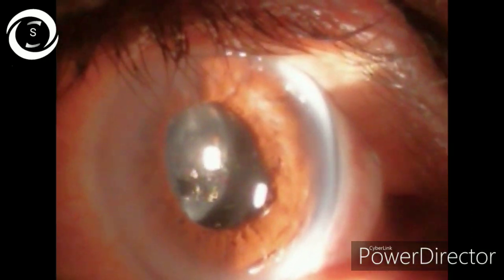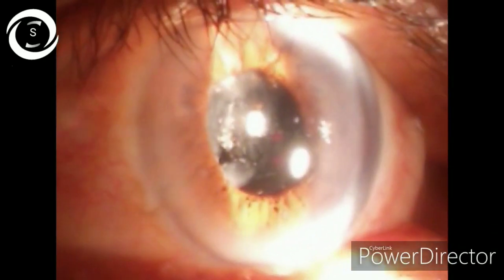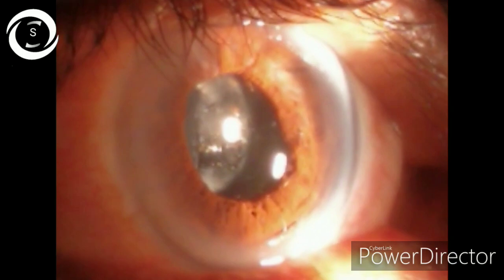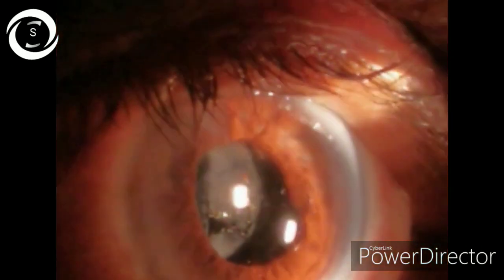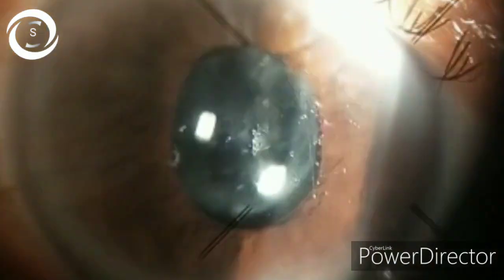On slit lamp, see Elschnig pearls. What are the Elschnig pearls? They are round and clear pearl-like opacities that shine on retro-illumination and Soemmering's rings - these are rings of epithelial cells. Now the question is how to treat the already formed PCO and how to avoid or delay this complication.